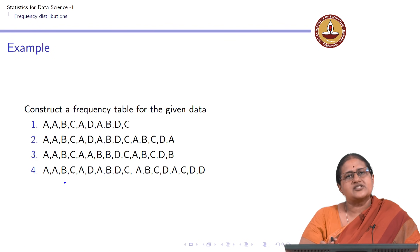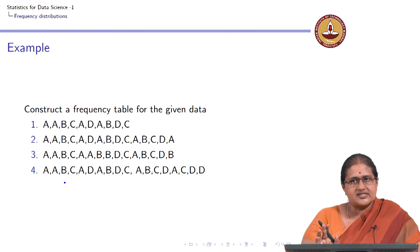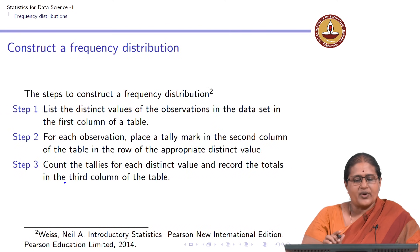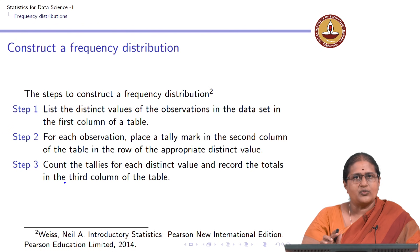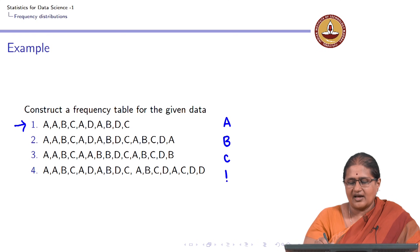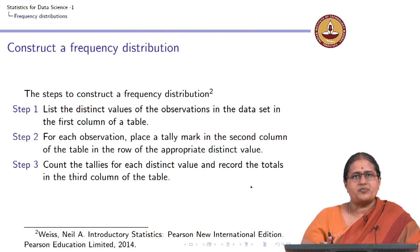Let us look at constructing a frequency table for simple given data. The category is just alphabets — I have four categories which I can term as A, B, C, and D. To construct the frequency distribution, Step 1 is to list the distinct values of observation. Here the distinct values are A, B, C, and D, which form the first column of the frequency table.